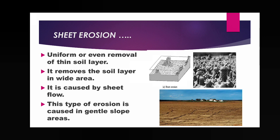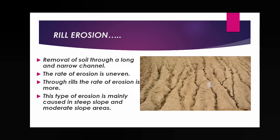Rill erosion means erosion of the soil by rill flow — through rills, which are long narrow channel features created by the flow of water. In rill erosion, the removal of soil mainly occurs where the channels are being formed. You can see in the picture that where channels form, the soil erosion rate is more. Rill erosion mainly occurs where steep slope and moderate slope are prevalent.